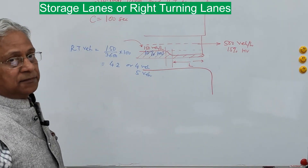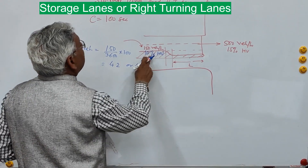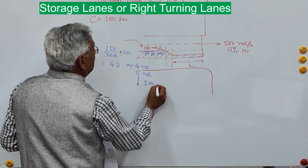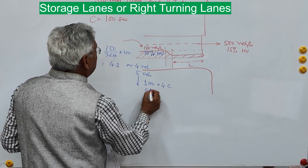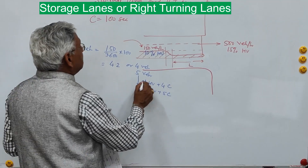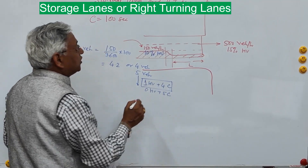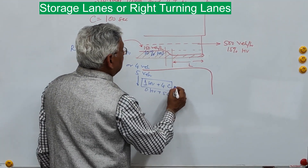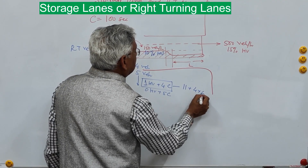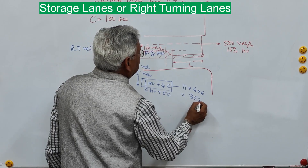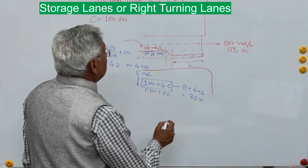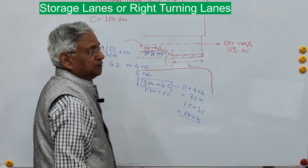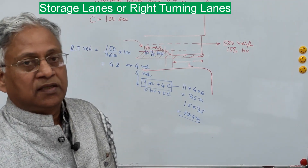Taking 5 vehicles with 10 percent heavy vehicles, there will be either 1 heavy vehicle plus 4 cars, or 0 heavy vehicles plus 5 cars. Taking the first case, and assuming the length of a car is 6 meters and the length of a heavy vehicle is 11 meters, the total length will be 11 meters plus 4 into 6 meters, which is 35 meters. Multiplied by 1.5, that gives 52.5 meters — let us say 55 meters as the length of the storage lane.